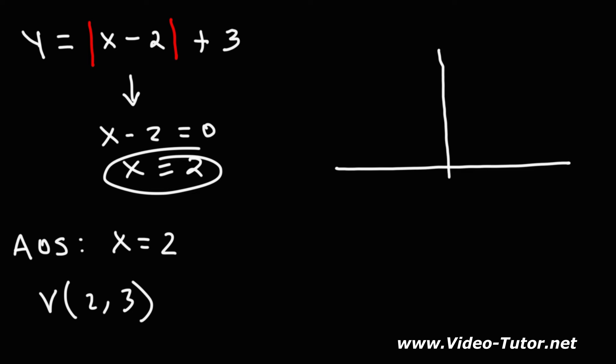Now, if you were to draw a graph, or at least a rough sketch, it would look something like this. So the vertex is at 2, 3. And because we have a positive sign in front of the absolute value function, the graph is going to open upward.